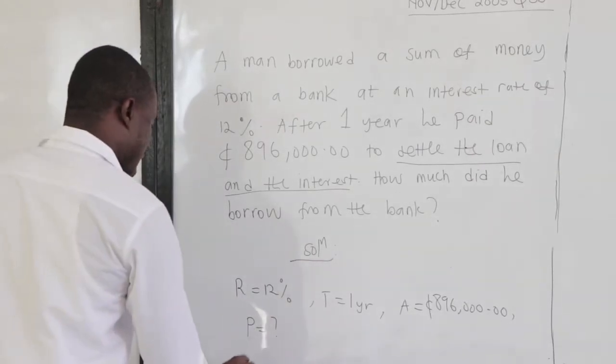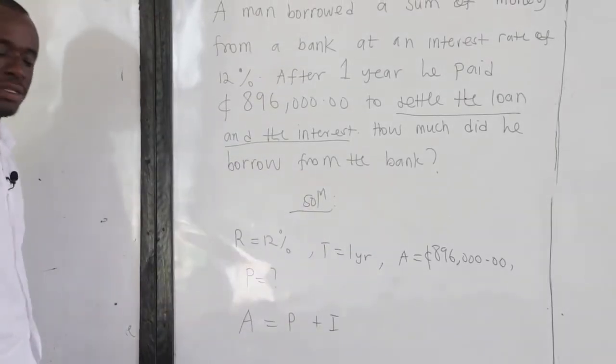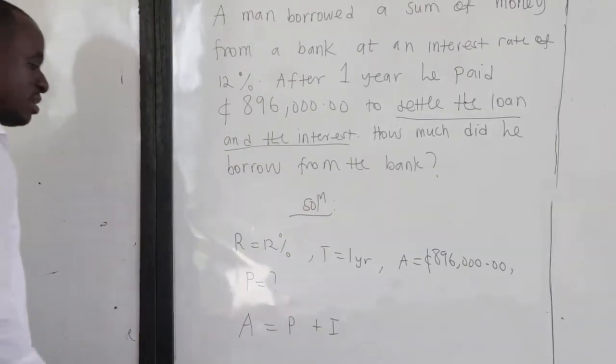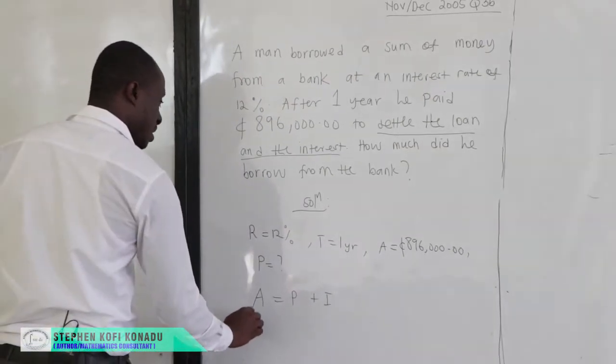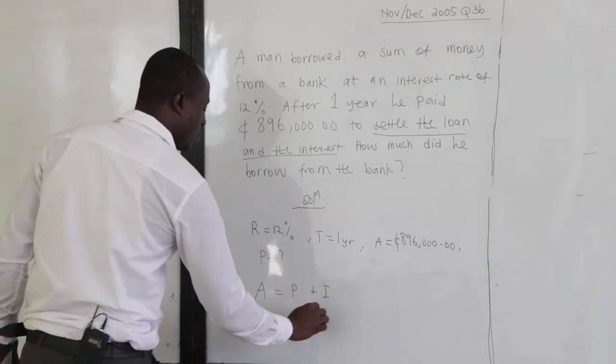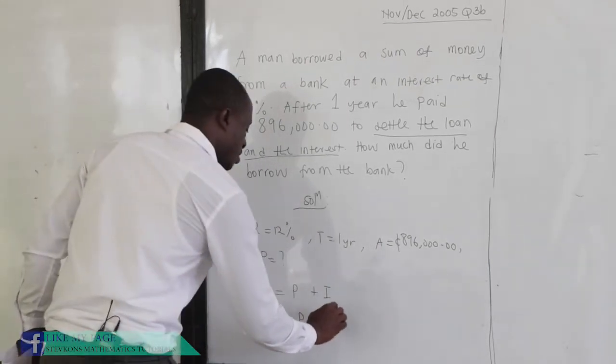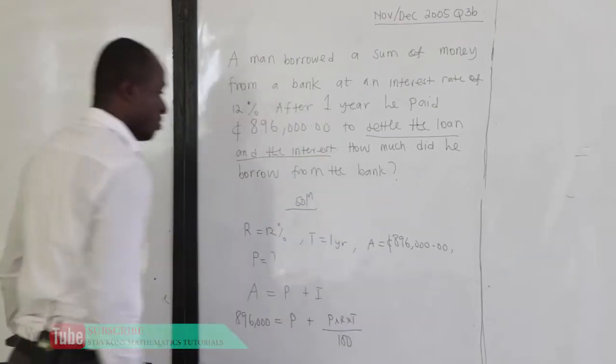So we know that amount is principal plus the interest. Now, what is the amount given to us? The amount given us is $896,000. Principal, we don't know. Now, how do we find the interest? The interest is P times R times T, all over 100.